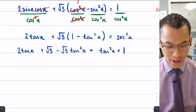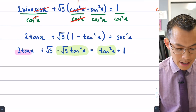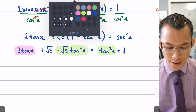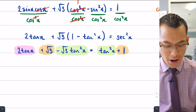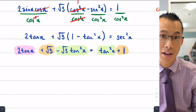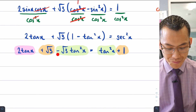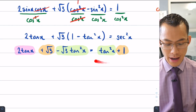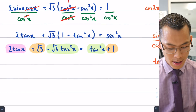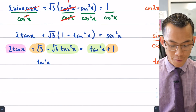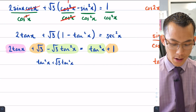I can identify the tan²x terms, the tan x term, and the constant terms. To get everything on one side and avoid negatives, I'll add √3 tan²x to both sides, subtract 2 tan x from both sides, and subtract √3 from both sides. Everything moves to the right-hand side, leaving zero on the left, giving: (1 + √3)tan²x − 2 tan x + (1 − √3) = 0.